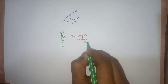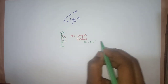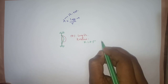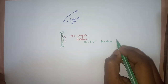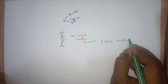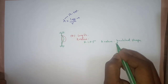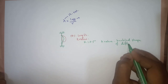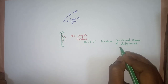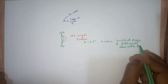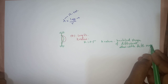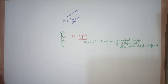For this case, the k value is 0.5. Now we will discuss the buckled shapes of different columns with different support conditions, using a chart of k values.